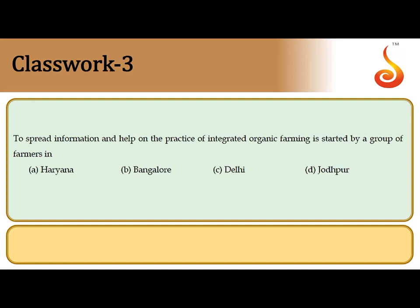The third question asks about integrated organic farming. It was initiated and is carried out by a farmer called Ramesh Chandra in Haryana, in a village called Sonipat. He started his own Haryana Kisan Club to spread information and help on the practice of integrated organic farming. The correct answer is option A.